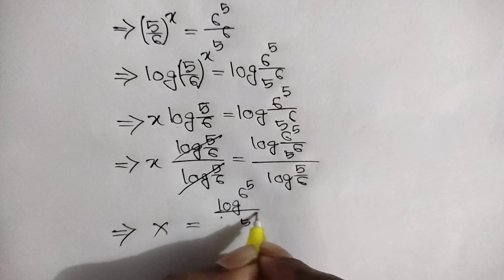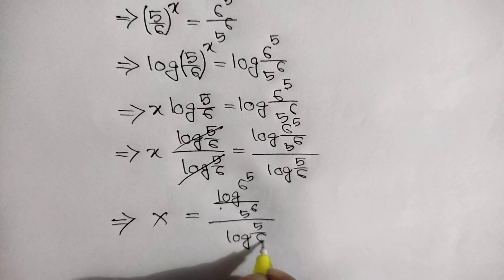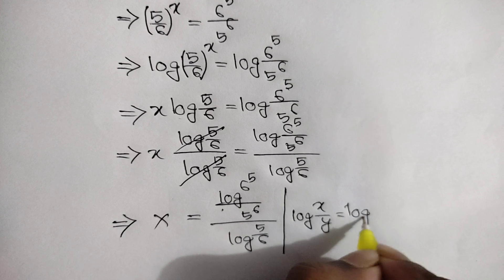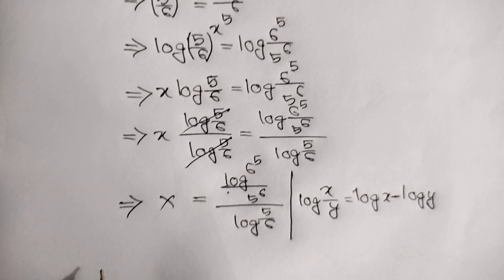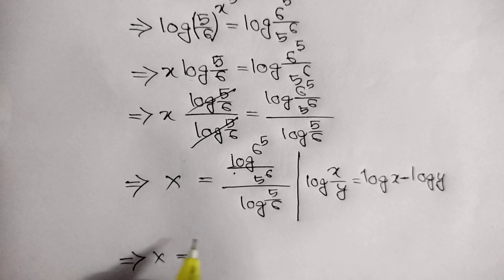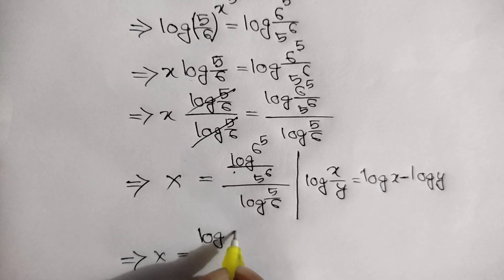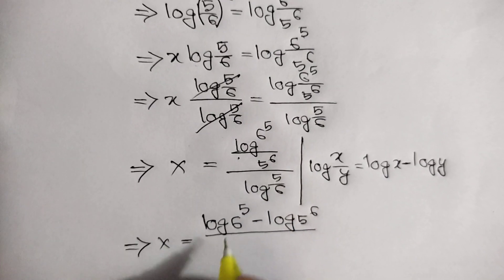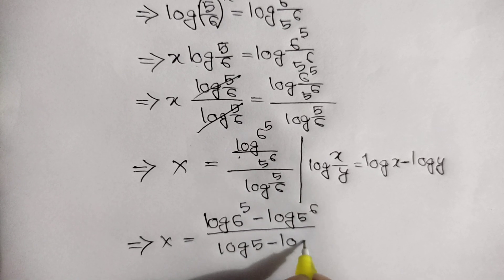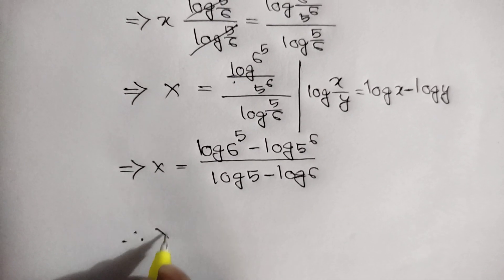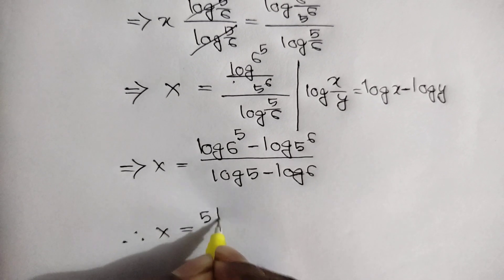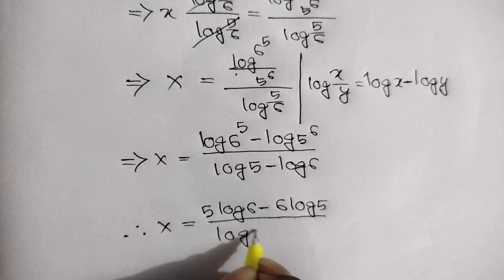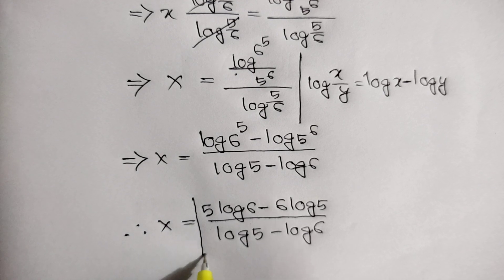Here we can apply this rule: log x over y is equal to log x minus log y. So x is equal to log 6 to the power 5 minus log 5 to the power 6, over log 5 minus log 6. Therefore the value of x is 5 log 6 minus 6 log 5 over log 5 minus log 6. This is the final answer.